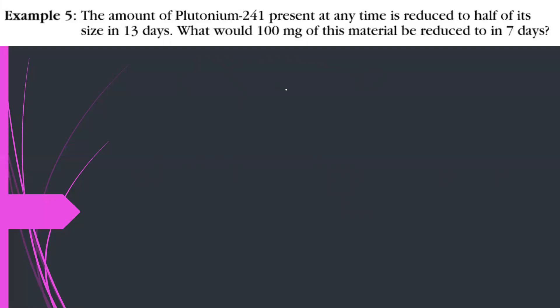The amount of plutonium-241 present at any time is reduced to half of its size in 13 days. What would 100 milligrams of this material be reduced to in 7 days? First of all, you have half-lifetime. t half now is equal to 13 days. Let's use the formula, Q(t) equals Q naught e to the negative rt. Because this is half-lifetime, I write now, consider the initial amount was like a, becomes half a, e to the negative r times the half-lifetime is 13 days.